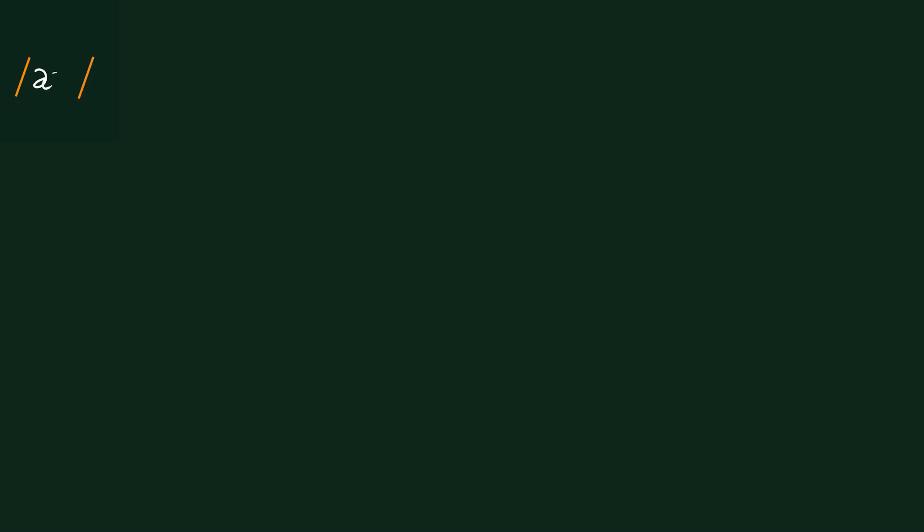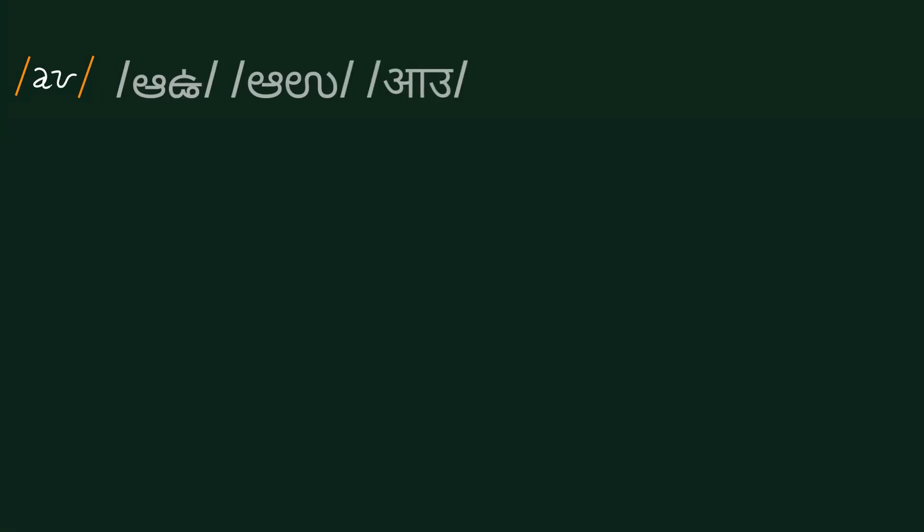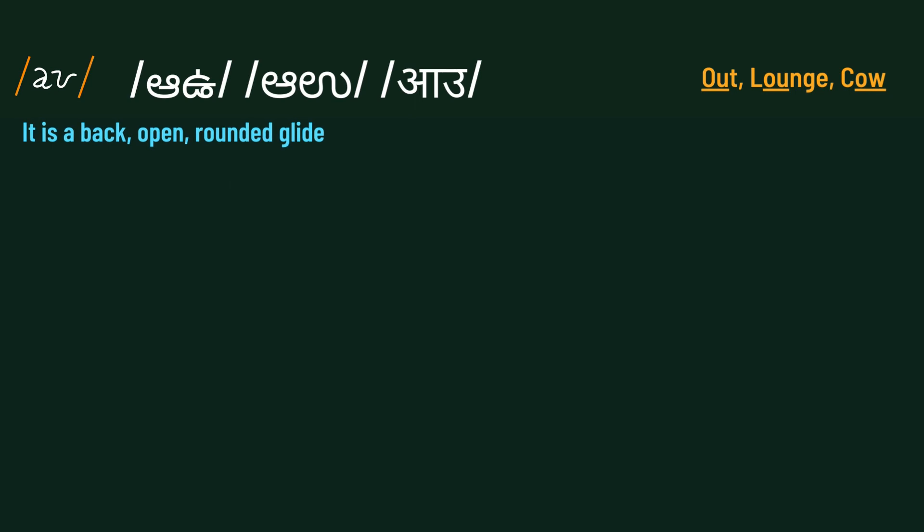The fifth diphthong is /aʊ/. It is a back open, rounded glide. Examples are: out, round, cow.